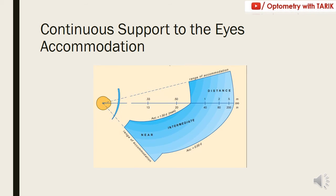The fourth advantage is continuous support to eye accommodation. In bifocal, there is a sudden change in accommodation from distance to near, requiring some adaptation, and intermediate is at a point where there is no power in the bifocal segment. In progressive, because of the smooth transition from distance to near, the patient's accommodation is not exerted, and the patient can have a complete fatigue-free, normal single vision throughout the distance-to-near range.